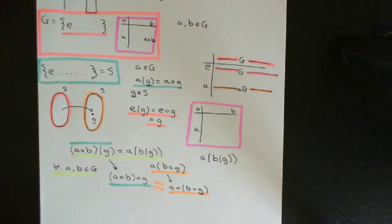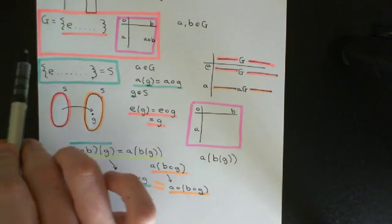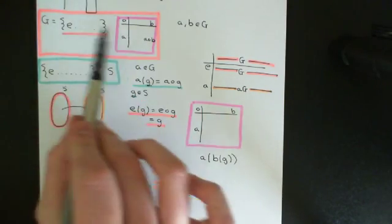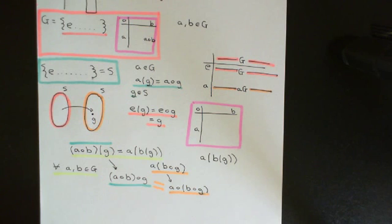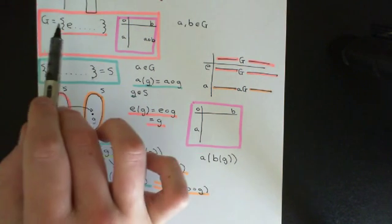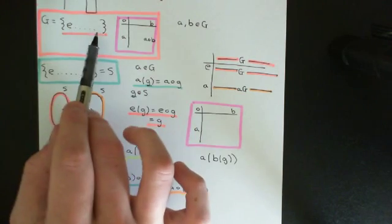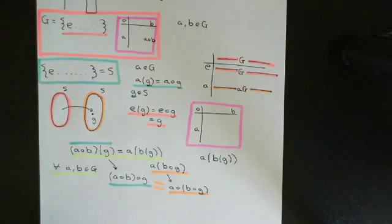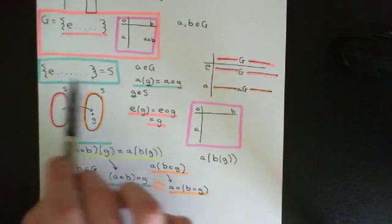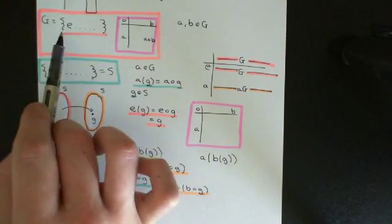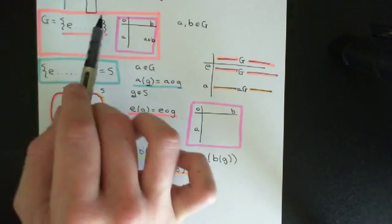Welcome back to this next video in which we are discussing Cayley's Theorem. We've now discussed what Cayley's Theorem actually says. Cayley's Theorem says that if you have any group — a set of symbols with a group composition law defined on it — then you can always think of the symbols within the group as representing set permutations of a set, and this set is going to be a copy of the set of symbols of the group.